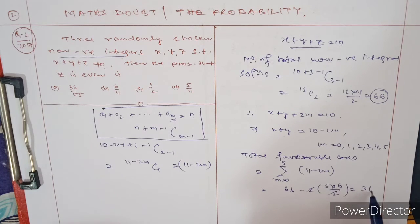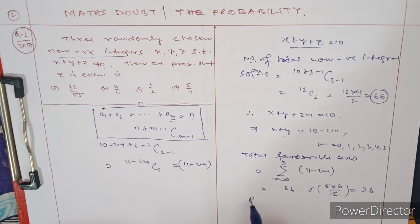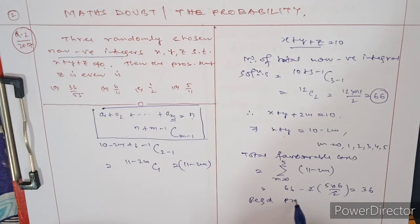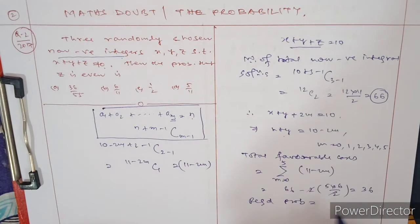The required probability is favorable cases over exhaustive cases, so 36 / 66. Cancel 6 from both, this gives 6 / 11. This is the right solution.